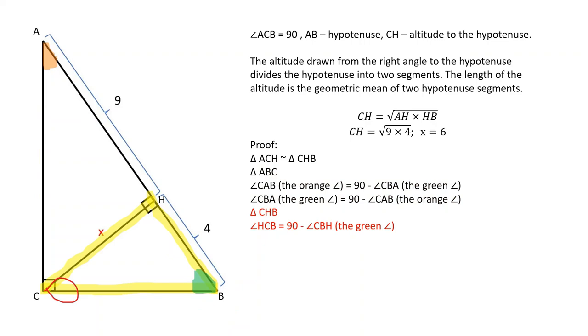In triangle CHB, angle HCB is equal to 90 minus angle CBH, the green angle. Therefore, it's equal to angle CAB, the orange angle.